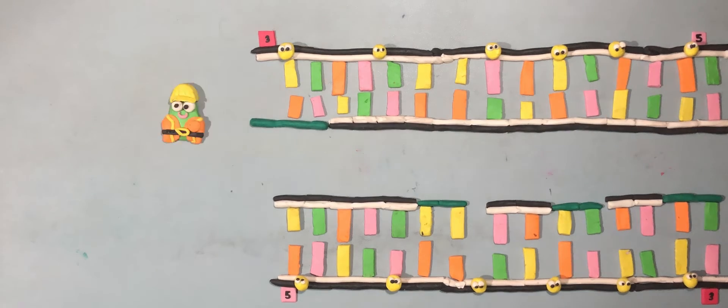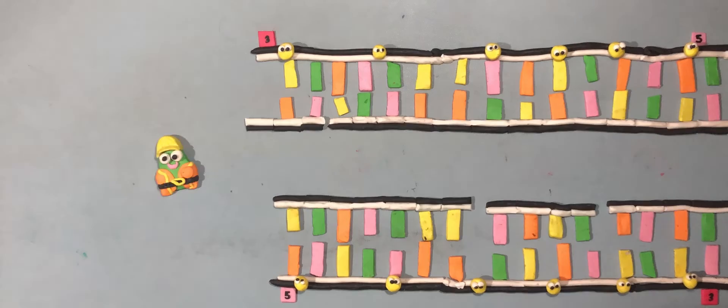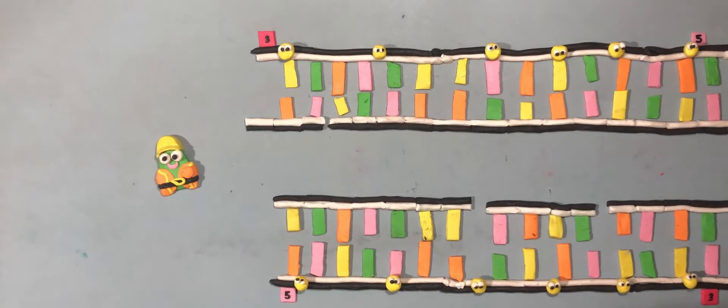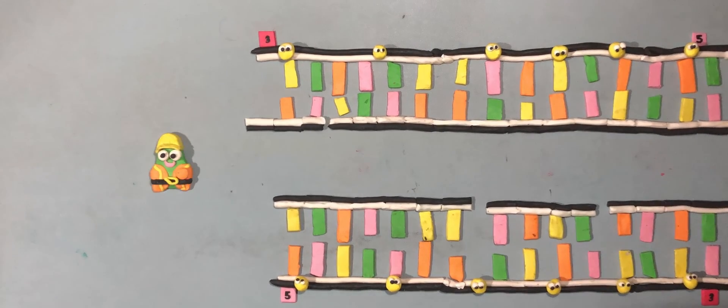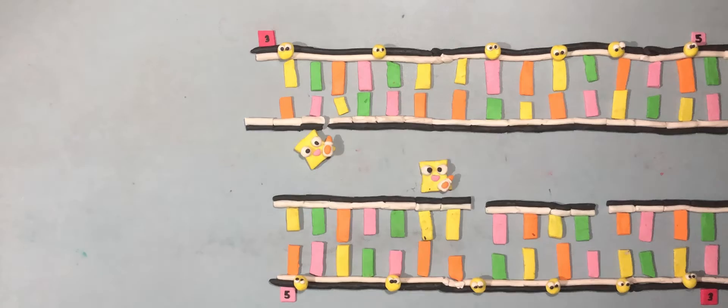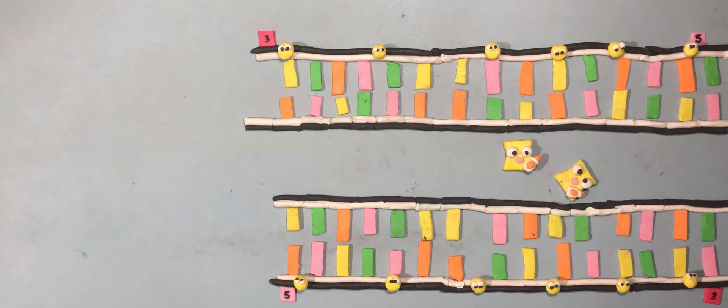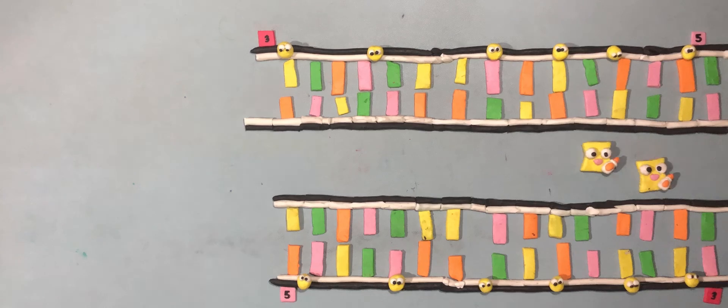Then, the DNA polymerase uses its 5' to 3' exonuclease activity to remove the RNA primer. Finally, DNA ligase, the gluing enzyme, fills the gaps between the Okazaki fragments, sealing them together.